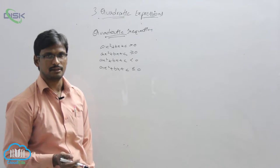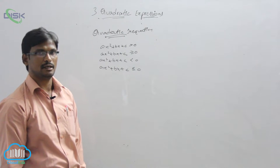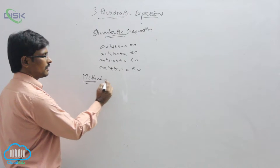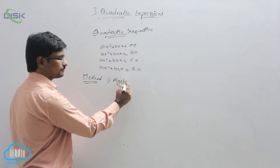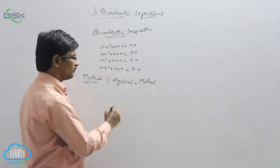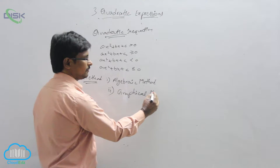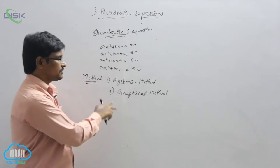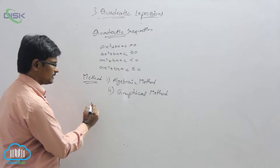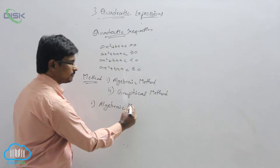For every equation we have a solution. Like that, for the quadratic inequation also solutions will be there. The methods of solving the quadratic inequation — we have two methods: one is the algebraic method, and the second one is the graphical method. Now we will see how to find out the solution by using the algebraic method.